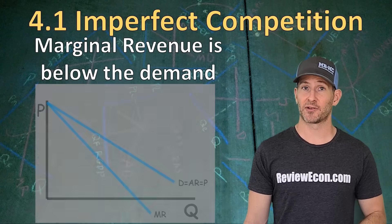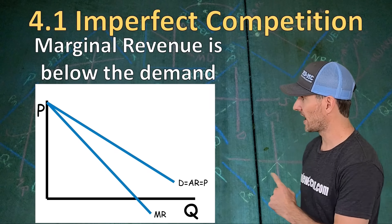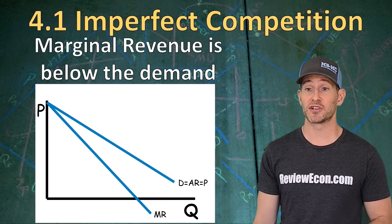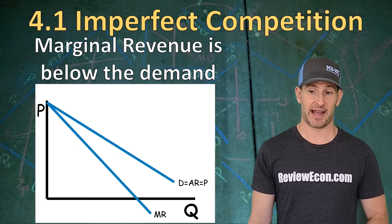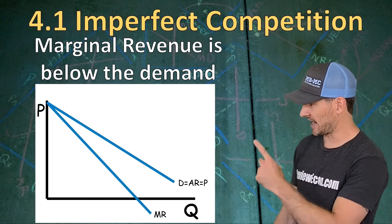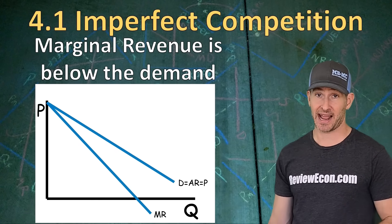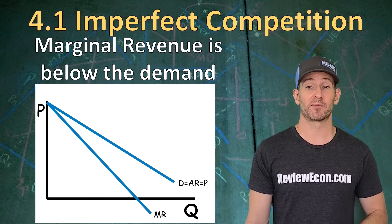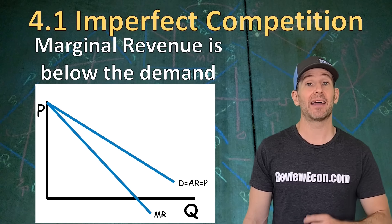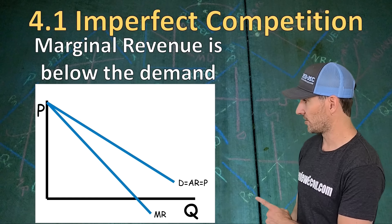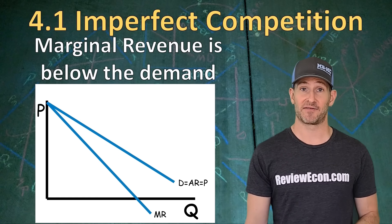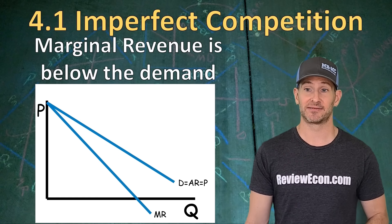Here's what it looks like on the graph. The marginal revenue curve is below the demand. We have a downward sloping demand, average revenue, and price, and the marginal revenue curve falls below. That's how you'll graph it when you sketch it out.